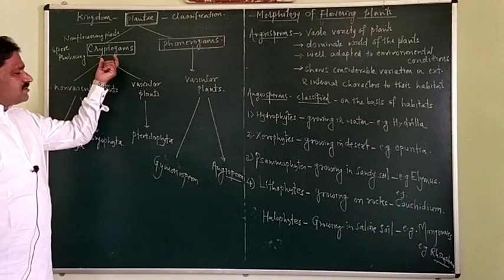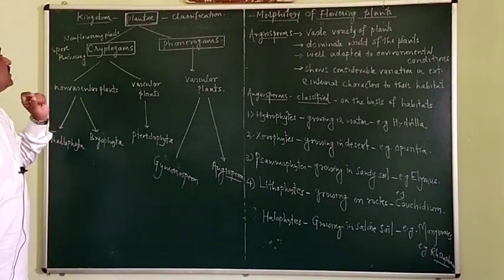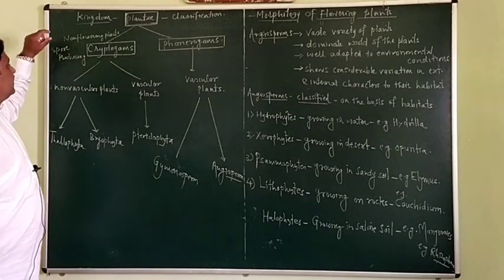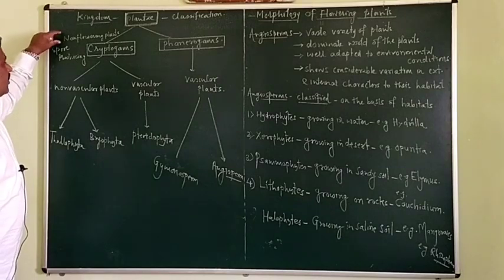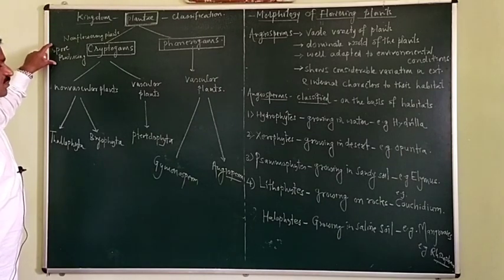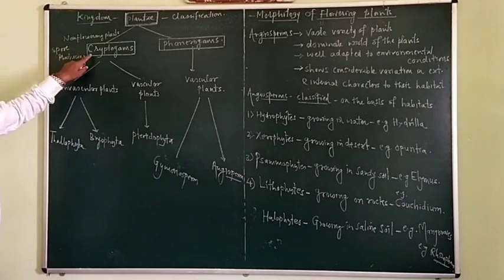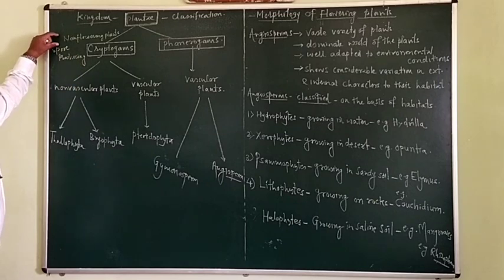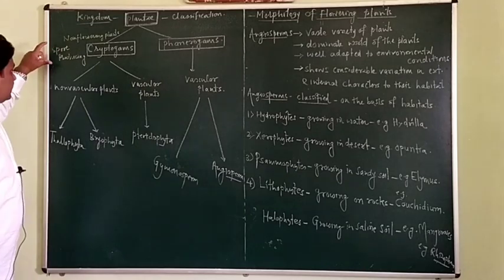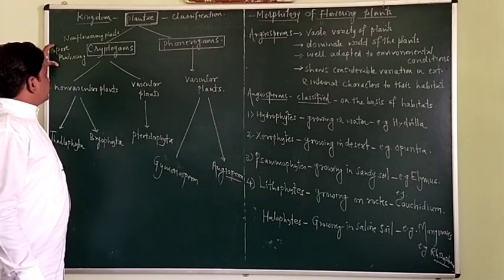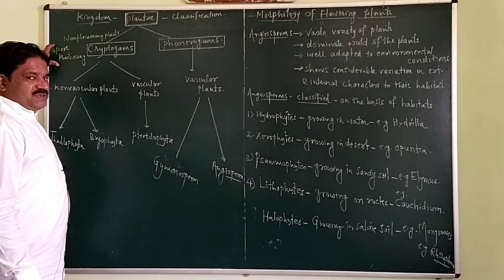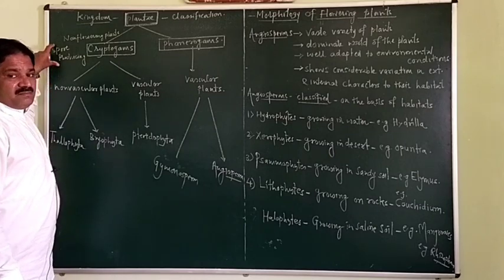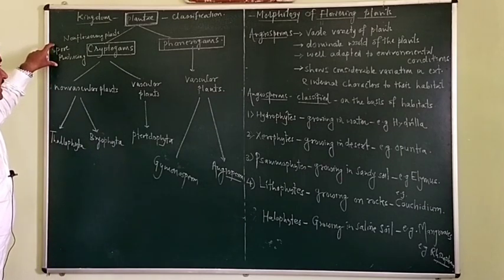Cryptogams is a group in which the plants involved are non-flowering plants and spore-producing plants. They do not produce seeds. These are spore-producing plants — microspores and megaspores.